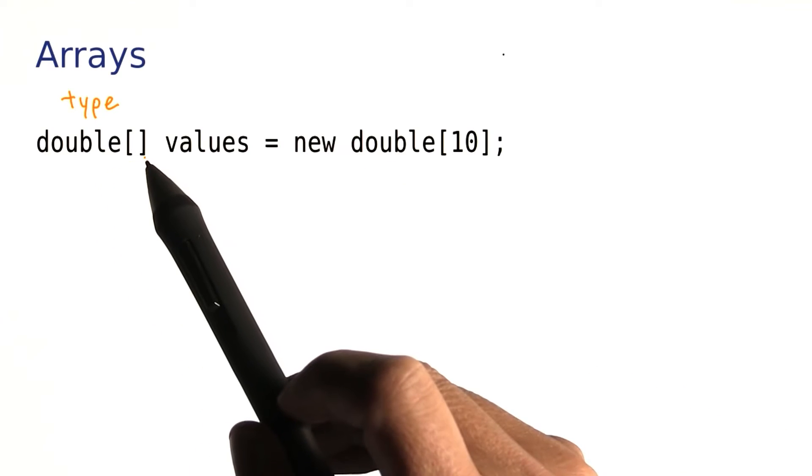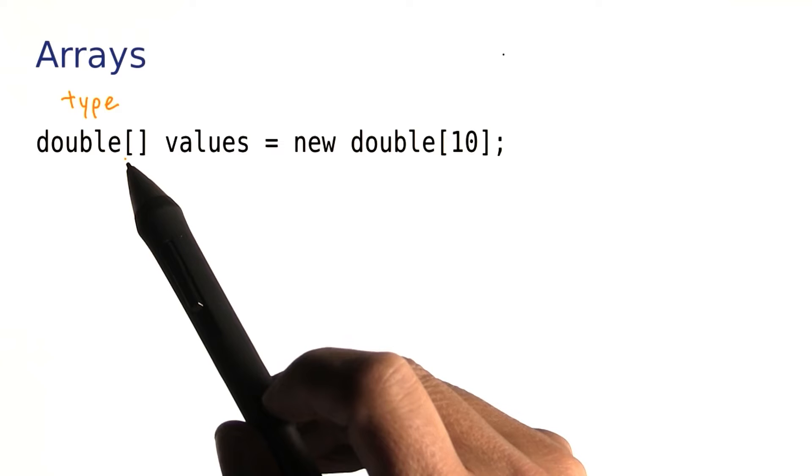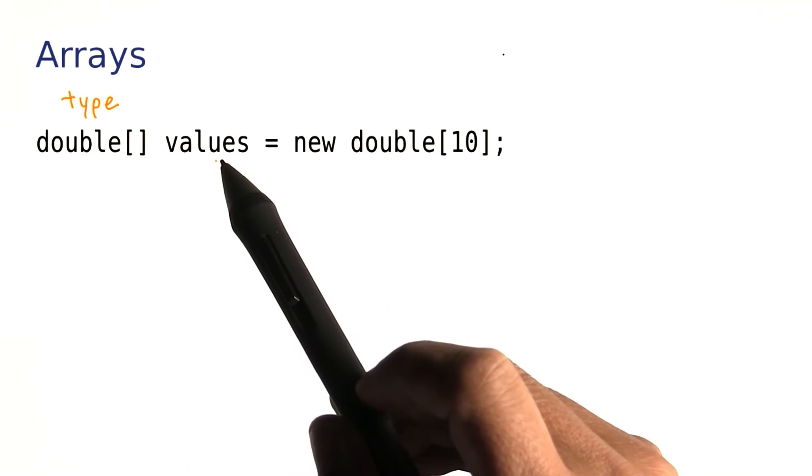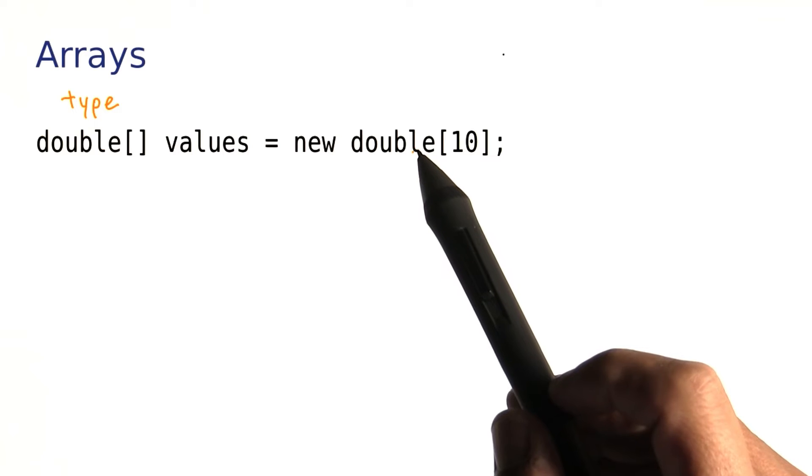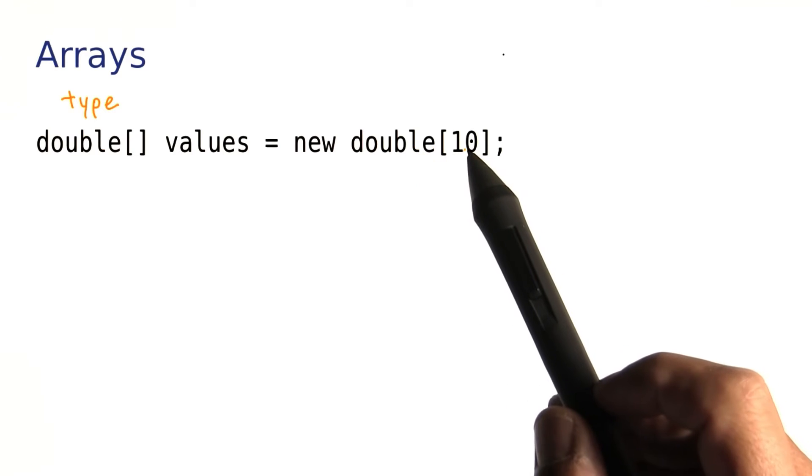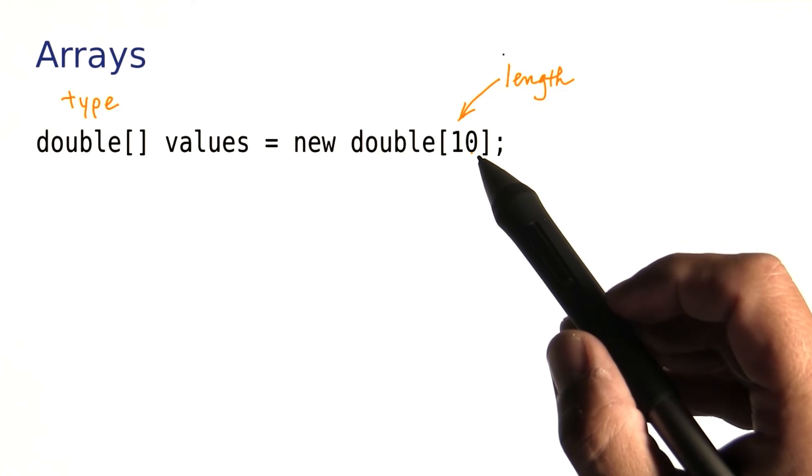Over here is the type. It's an array indicated by these brackets of double. This is the variable. Here's the new operator. And back here, we say we want to construct an array of 10 doubles. So as you can see, you put the length of the array inside the brackets.